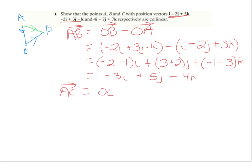I could find vector AC from OC minus OA. If I thought of the same figure and just replaced B with C, I'd have that same idea. OC is going to be represented by the third piece: 4I minus 7J plus 7K. And then I'm subtracting OA, which is I minus 2J plus 3K.